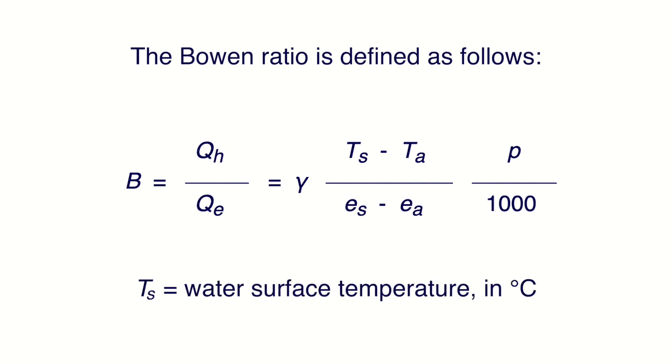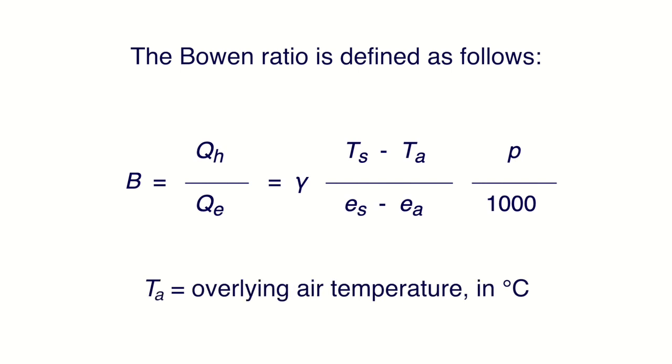T sub S is the water surface temperature in degrees Celsius, and T sub A is the overlying air temperature in degrees Celsius.